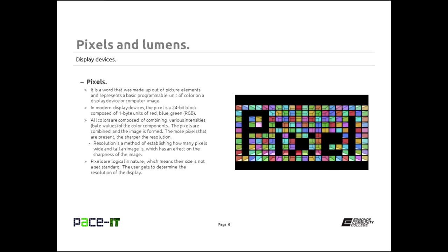In the modern display, the pixel is a 24-bit block composed of one-byte units — so eight bits each of red, blue, and green. For those of you who understand light, various combinations of red, blue, and green make up all the colors that we see. All the colors you see on your screen are composed by combining various intensities or byte values of the color components. Pixels are combined together and the image is formed.